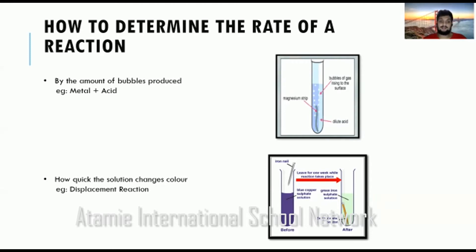In certain reactions, there would be gases produced; in certain reactions, there would be color changes; and in certain reactions, there can be some other new product formed, which you would see within the test tube or something like that. For example, if you are reacting a metal and an acid, we know when we react a metal and an acid, you are getting a salt and hydrogen gas. We know that a gas is produced when we see bubbles being produced within the reacting vessel.